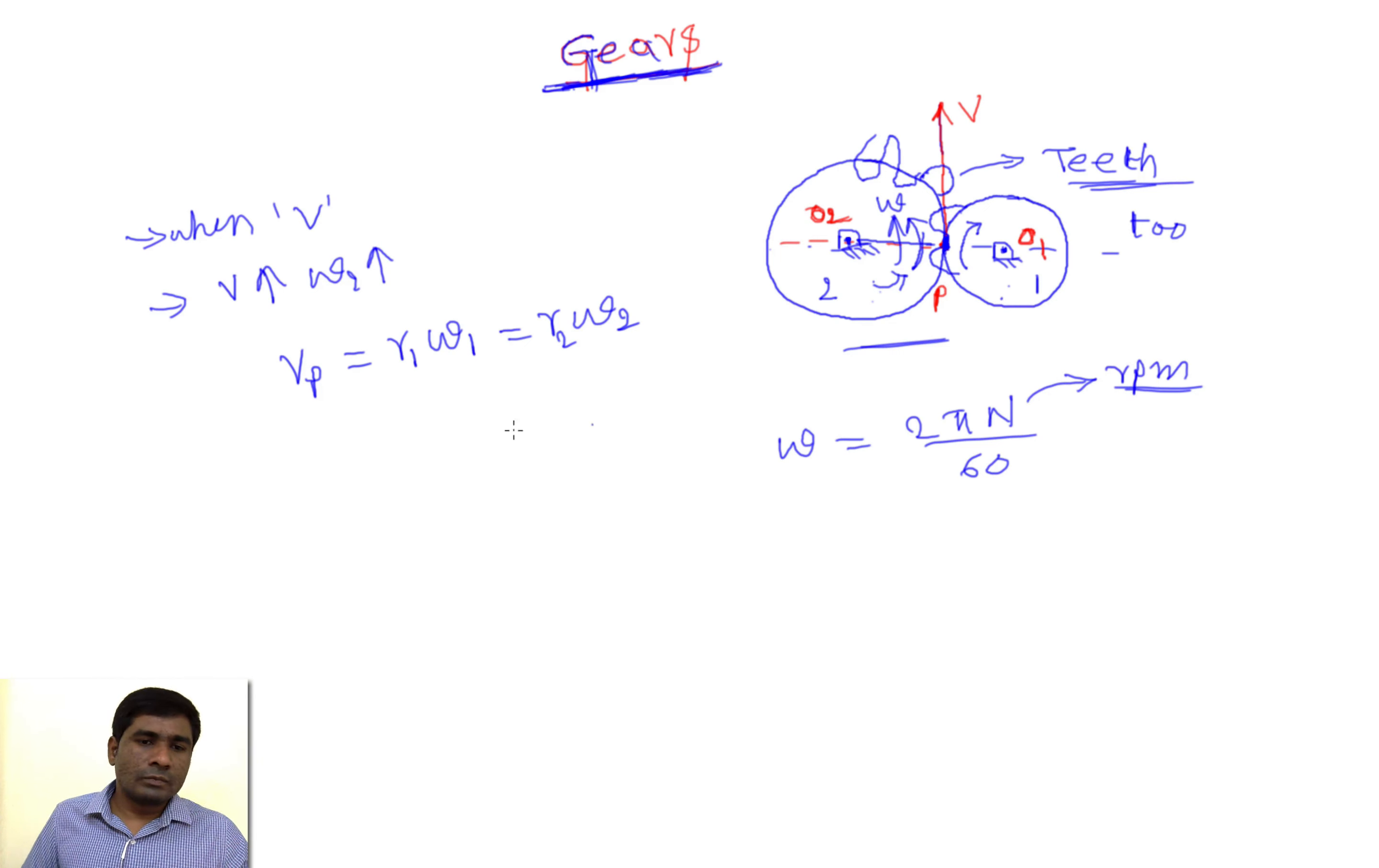If we substitute this in this equation, r1/r2 = ω2/ω1. And if I write omega in terms of n, the revolution per minute, then it will become n2/n1. We need to remember this formula because based on this formula, entire gear problems can be solved.